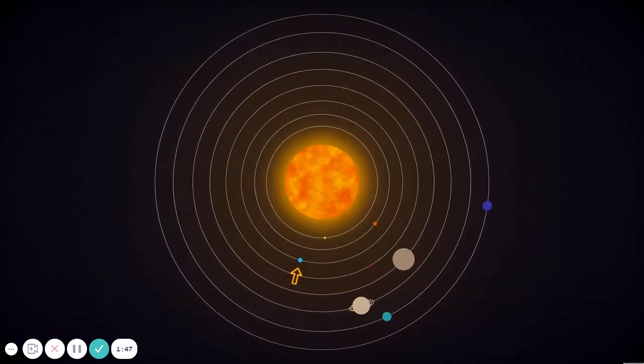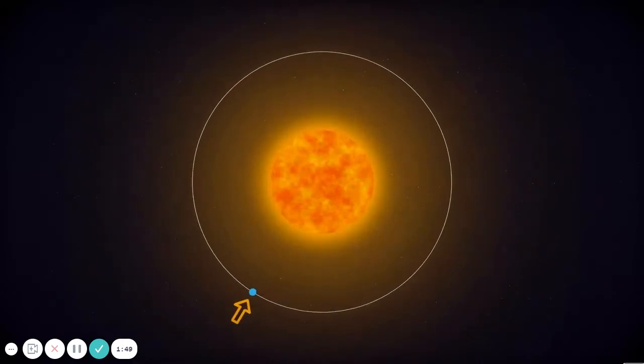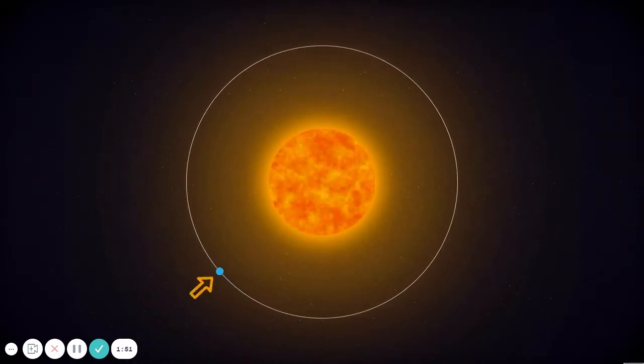This is what Earth looks like from space. The Earth goes around the Sun. Its path is so big it takes a period of one full year for the Earth to orbit, or to travel all the way around the Sun.